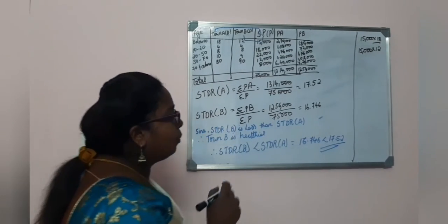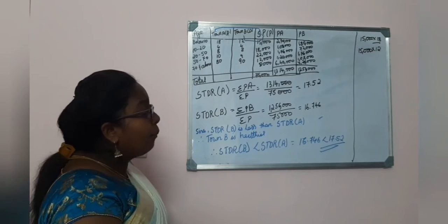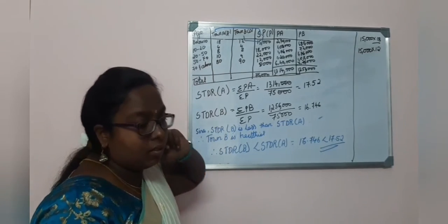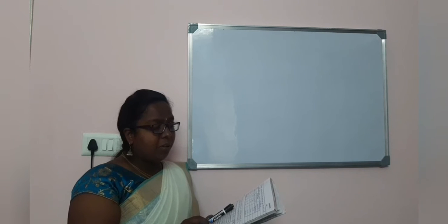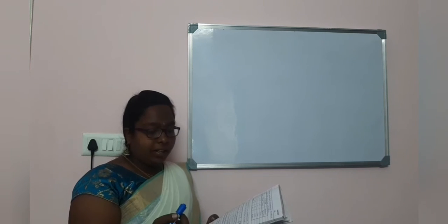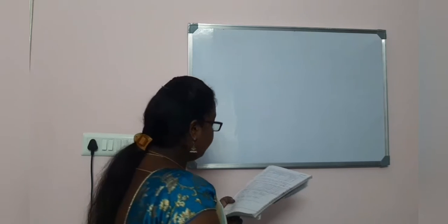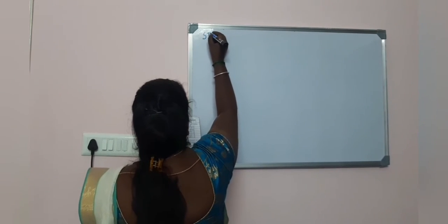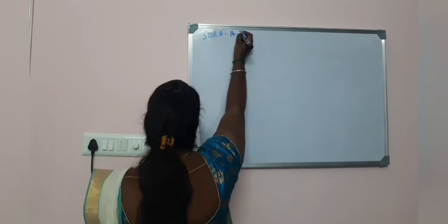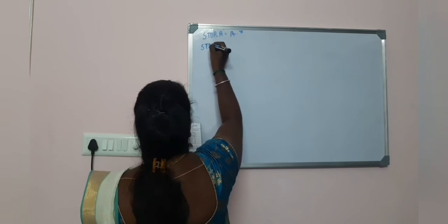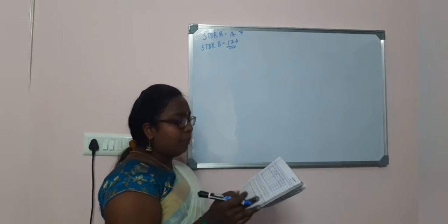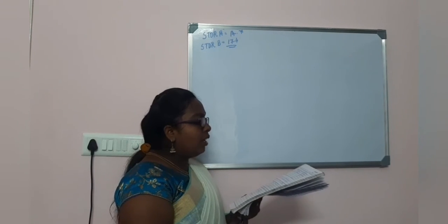This is your 5-mark problem where they ask you to compare which town has a healthier or lower death rate using two datasets. The third problem is similar to the second problem — please try it by yourself. If you don't get it, put a message and I will solve it in the next class. For problem 3, STDR of A is 14.7 and STDR of B is 17.4 — only the values have changed.